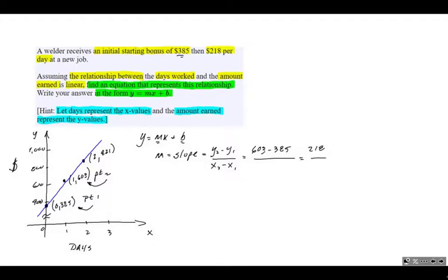And our x value, our x2 value right here is 1, and our x1 value is 0. So 1 minus 0 is just 1. So our slope, our m, is going to be 218.